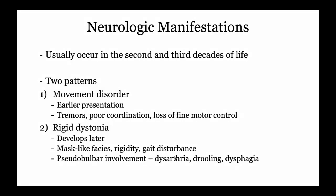The neurologic manifestations typically appear in the second and third decades of life and can be either a movement disorder or rigid dystonia. Movement disorders include tremors, coordination problems, and loss of fine motor control. Dystonia looks like a Parkinsonism-like syndrome with mask-like faces, rigidity, gait disturbances, dysarthria, dysphagia, and drooling.